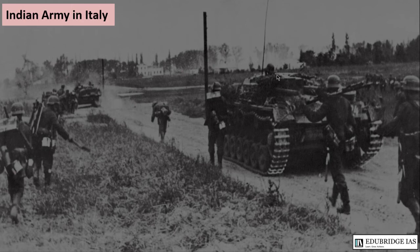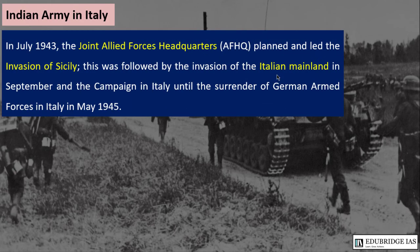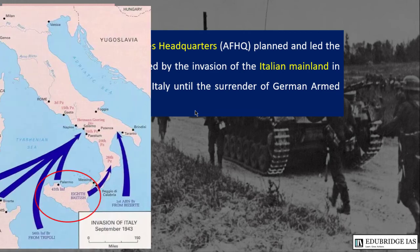Regarding the Indian Army's role in Italy: in July 1943, the Joint Allied Forces Headquarters planned and led the invasion of Sicily, which is an island in the Mediterranean Sea to the south of Italy. This was followed by the invasion of the Italian mainland in September, and the campaign continued until the surrender of German armed forces in Italy in May 1945.